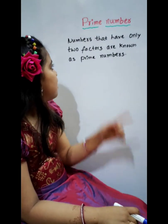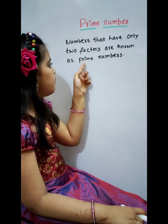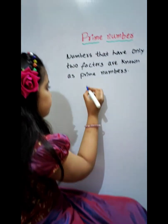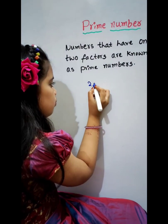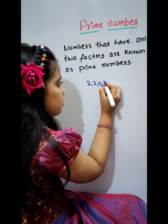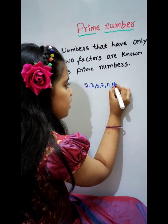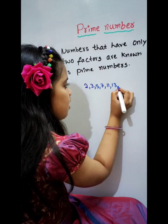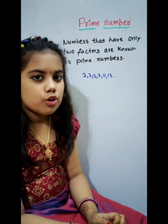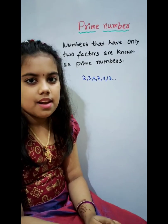Prime Numbers. Numbers that have only 2 factors are known as Prime Numbers. For example, 2, 3, 5, 7, 11, 13, etc. These numbers have only 2 factors: 1 and the number itself.